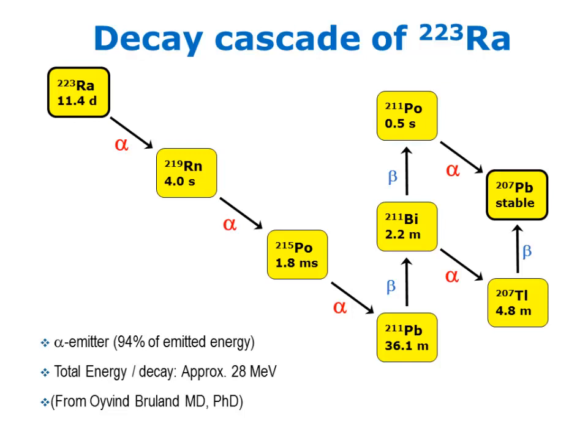Next, you get polonium-215, which decays to lead-211, then via beta decay to bismuth-211. That can go either to polonium-211 then lead-207, or down to thallium-207 and then lead-207. Either way, you get one additional alpha decay and one additional beta decay out of that cascade. The end result is lead-207, a stable element. The patients are getting a very small amount, thought to have no ill effects.